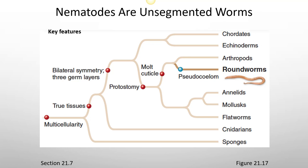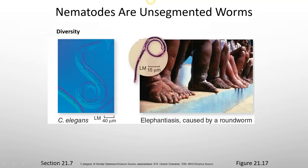Nematodes are unsegmented worms. Here you can see the roundworms. They have a pseudocoelom. They're very diverse, and some nematodes cause human disease. For example, elephantiasis is caused by a roundworm.